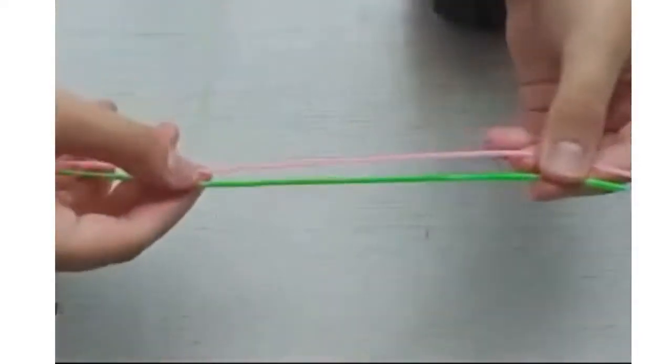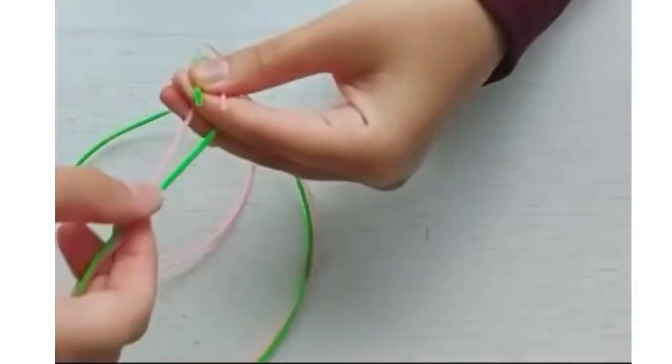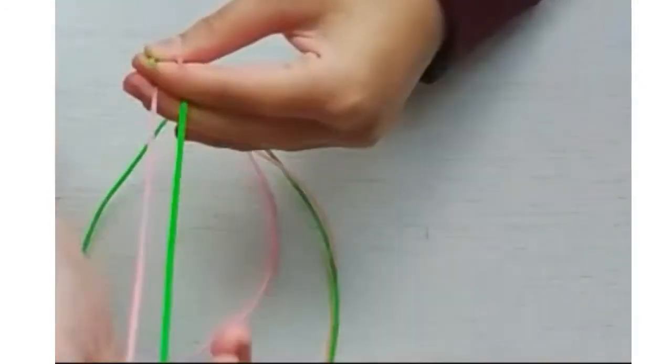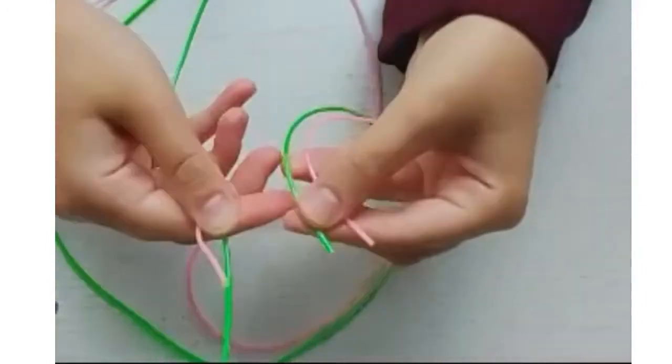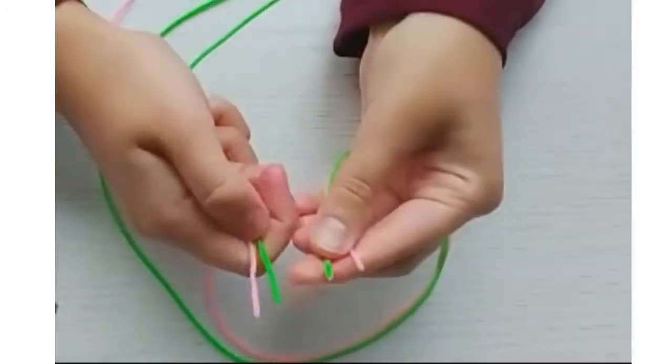Match your two favourite colours of string together and make sure that the end of the strings are equal. Do the same on the other side. Bring all of the ends together and fold it in half.